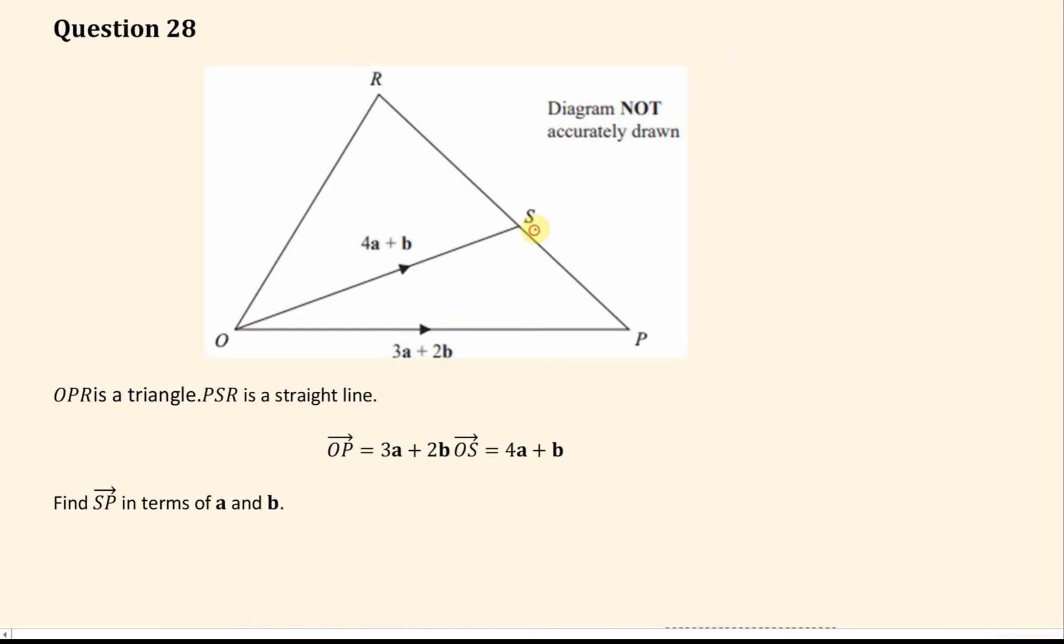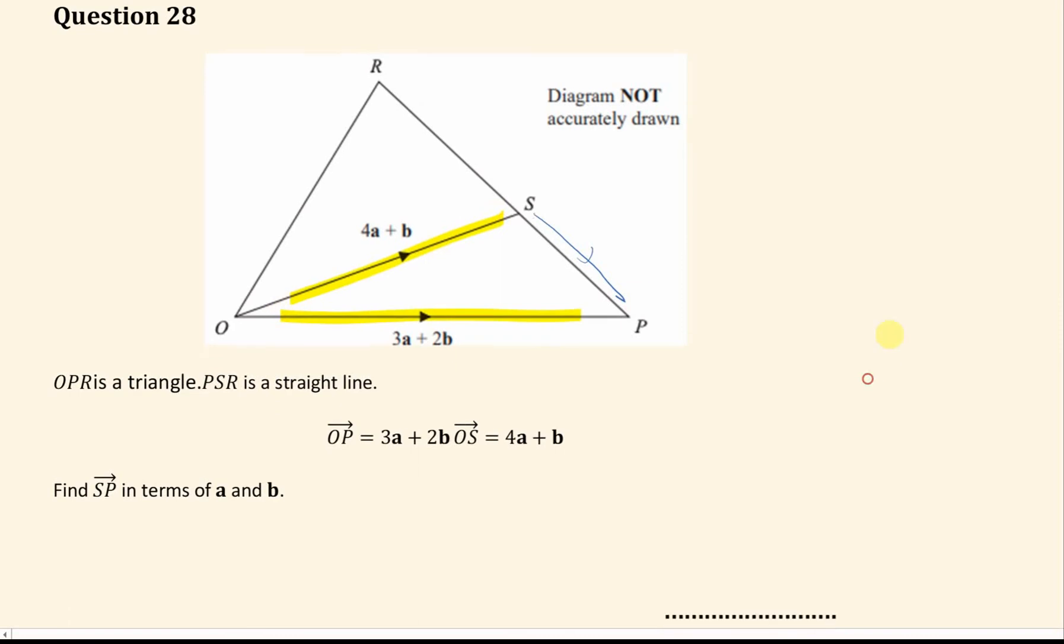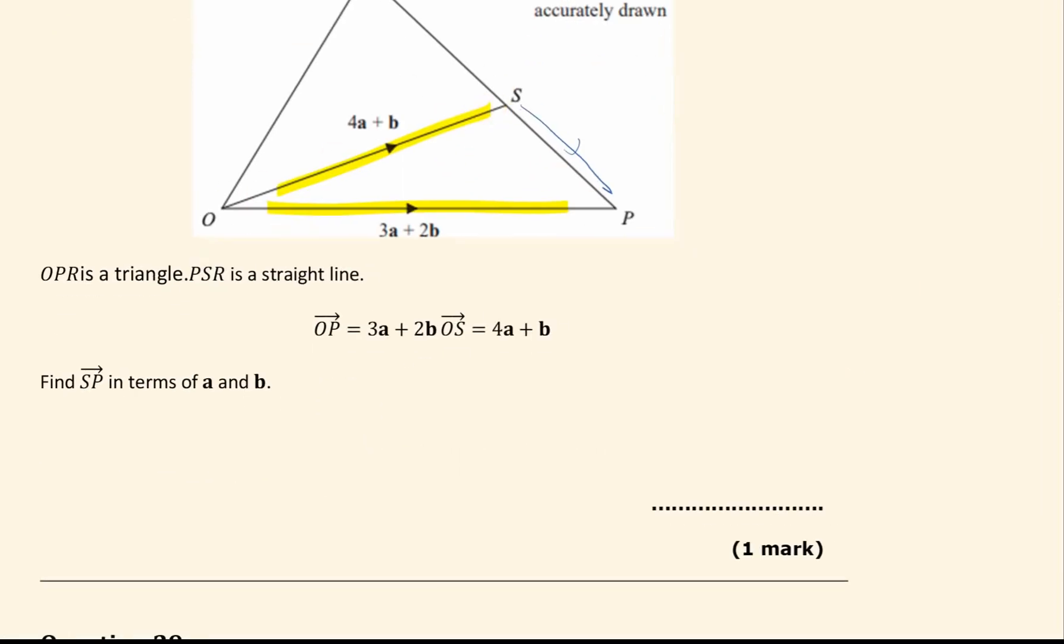Here the same idea, we want the vector S to P, so we go from here to here, so we have to go along routes we know, so I'll go here and then here. For the first route from S to O I'm going backwards, so that will be minus 4a minus b. Then from O to P I'm going in the right way, so that is plus 3a plus 2b. Simplifying that, that is going to be minus a plus b. And for most questions you are expected to simplify it or give it its simplest form.